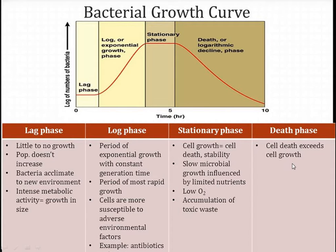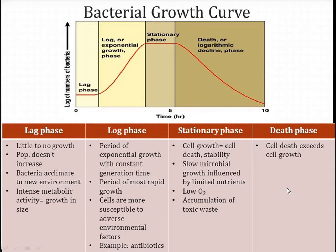The fourth phase is the death or decline phase. In this phase, bacterial cells die and the rate of cell division gradually decreases, eventually stopping. But some bacteria survive this phase by forming spores or cysts.